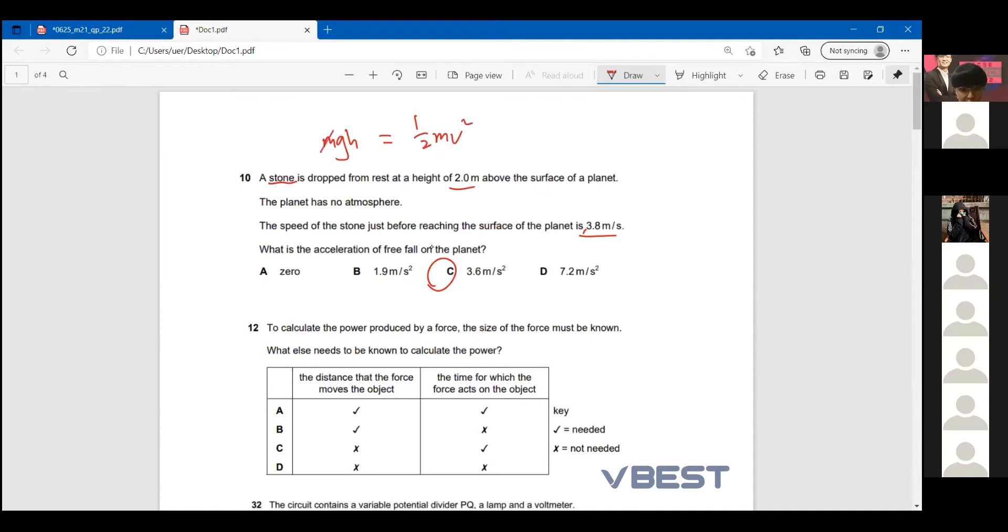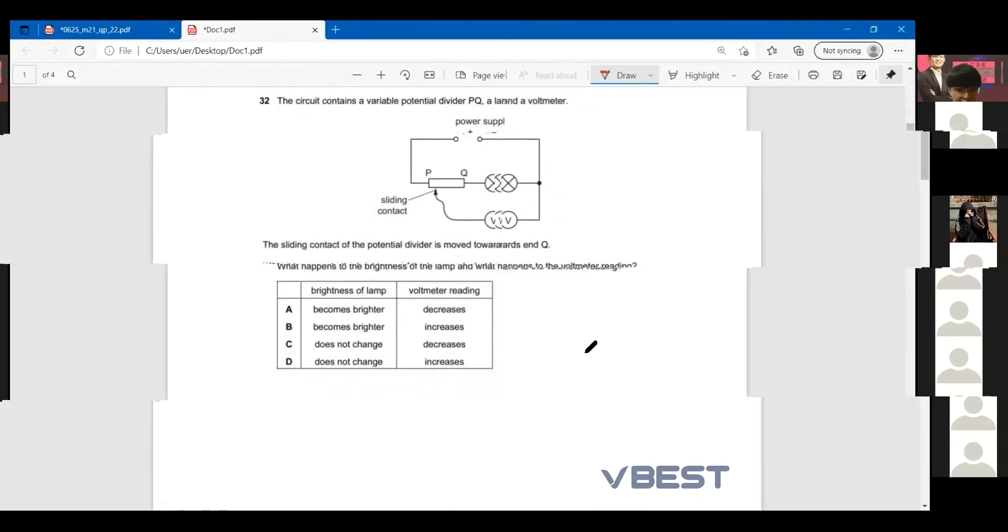So the m I cancel out. I want to find g. You submit all the values you have - the height is 2 and then the v is 3.8, so you get your g equals to 3.6.